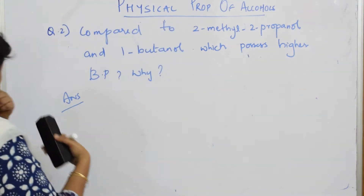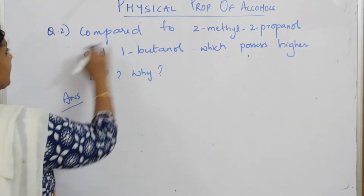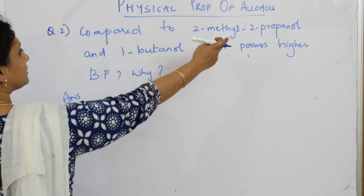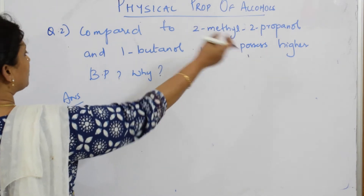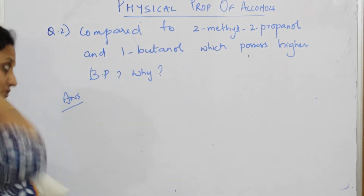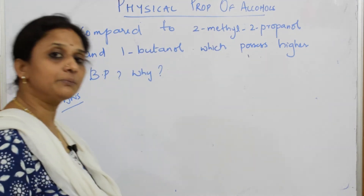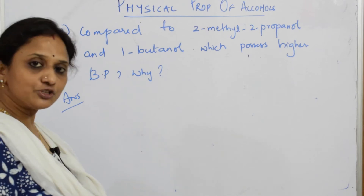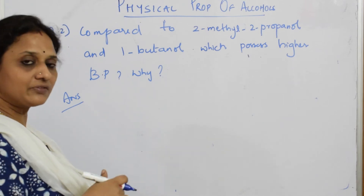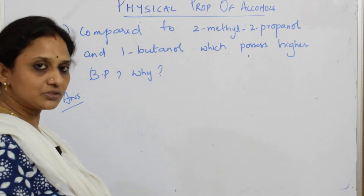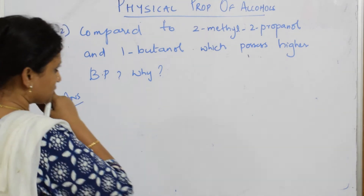Let us read this question. They've given me: compared to 2-methyl-2-propanol and 1-butanol, which possesses higher boiling point? Why? There is no data given to me — they have not given me any Kelvin, any temperature. So let me write the structure and see.